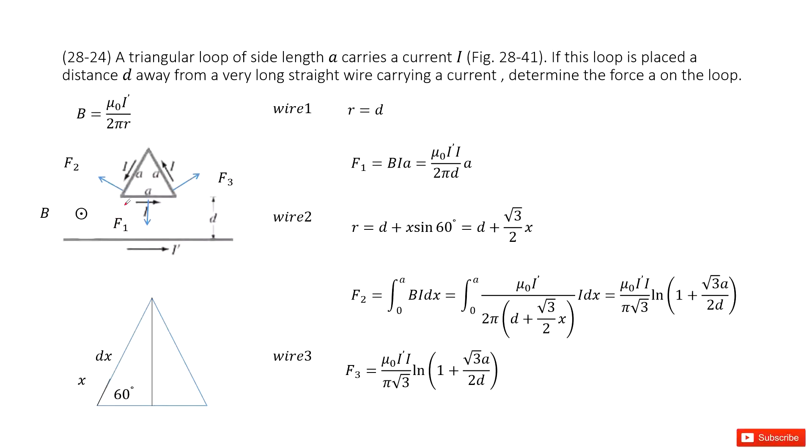First, what force acts on the loop? This is a magnetic force. Where does the magnetic field come from? It comes from the bottom wire. So the magnetic field is due to the bottom wire. We can use the right-handed rule to determine that this magnetic field is pointing out at these locations everywhere.